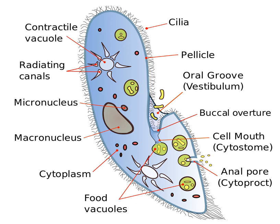Associations. The cytostome has also been found to associate with the flagellum of Trypanosoma cruzi. So far, this is the only known example of an endocytotic organelle being associated with an organelle that is used for locomotion.